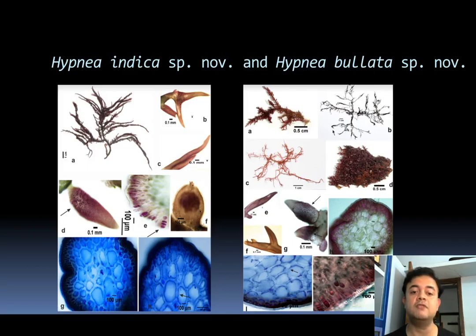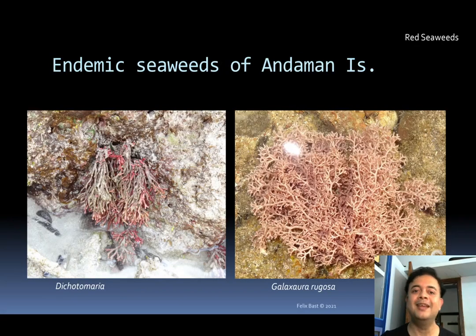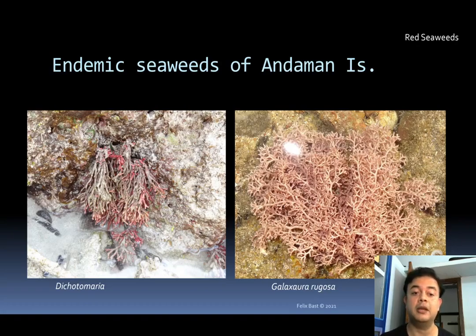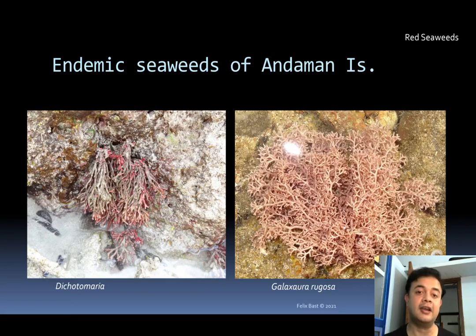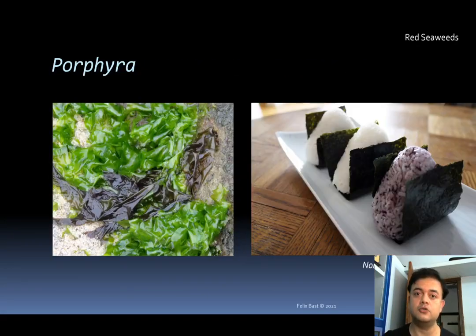Endemic red algal seaweeds of the Andaman Islands include Dichotomaria — very gel-like and soft — and Galaxaura rugosa, which doesn't even look like an alga. If you touch it you feel it is an animal — like a soft coral — but it is an alga; very interesting and beautiful. This is how Porphyra looks — it is monostromatic, just like Ulva. You can find Porphyra in India on the coast of Kerala, but we don't really cultivate it.